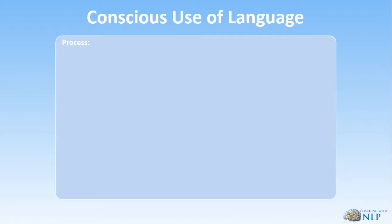Let's talk about the conscious use of language. We're on page 81. The desired outcome of the language section is for all participants to be able to successfully use language to produce the desired results — chunking up or down to levels of greater ambiguity or specificity. We're going to learn a number of techniques to help us do that, including the use of specificity or ambiguity in language.